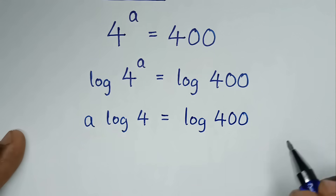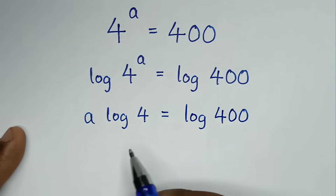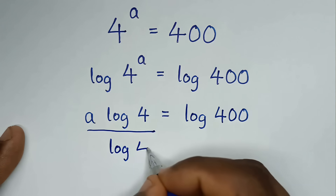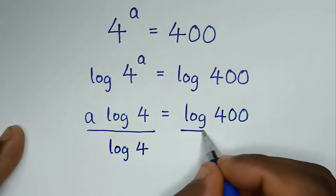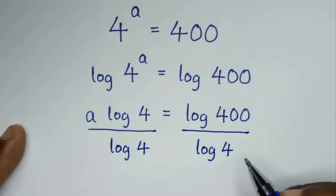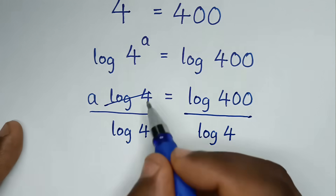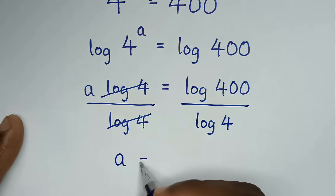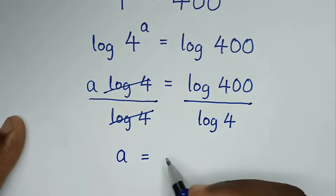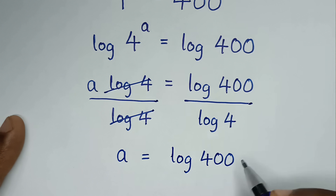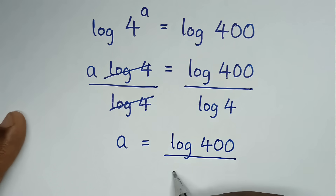Then we will divide by log of 4 in both sides. So log of 4 will cancel log of 4, and it will be a is equal to log of 400 over log of 4.